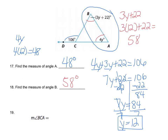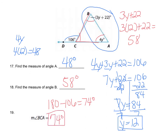Number 19: find the measure of angle BCA — the interior angle. This interior angle and its exterior angle (106 degrees) are supplementary, so 180 minus 106 equals 74 degrees. For this whole page: first find Y, then substitute Y in for each angle expression to solve for the full angle measure.